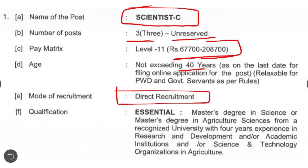Qualifications for the Scientist C post: a Master's degree, that is MSc in Science or MSc in Agriculture Science from a recognized university, with four years of working experience in research or in science and technology organizations in agriculture, is essential.